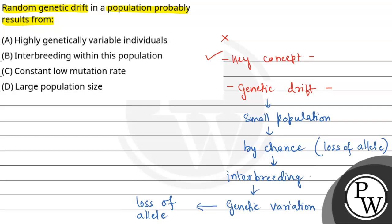Constant low mutation rate — if the mutation rate is low, the population will remain stable and in equilibrium, so genetic drift won't be seen. And large population size — large population size maintains equilibrium, whereas in a small population, genetic mutation or its spreading and variation can be seen more quickly. So this statement also does not help and is not a result of genetic drift.